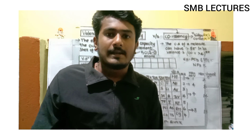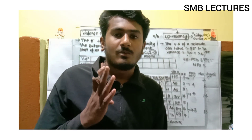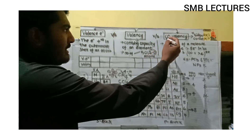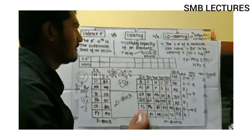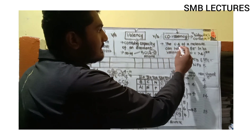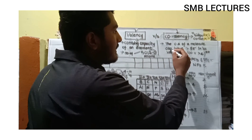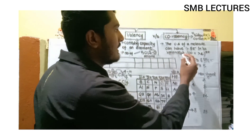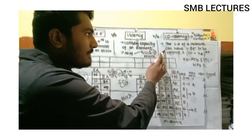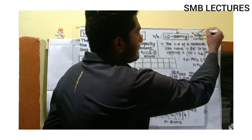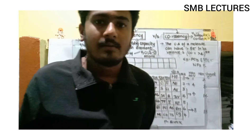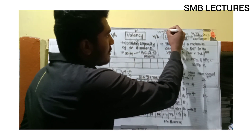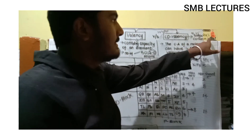Now let us enter into covalency. The central atom of a molecule can have more than eight electrons in its valence shell. This concept was given by a scientist named Sidgwick, who proposed the maximum covalency concept.